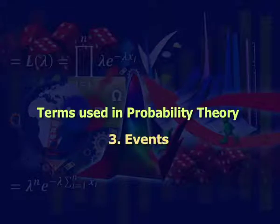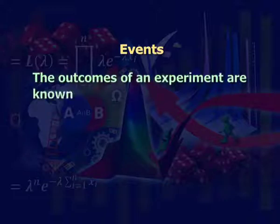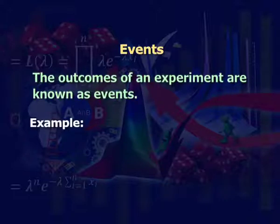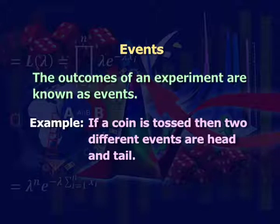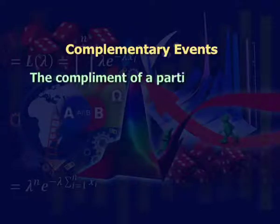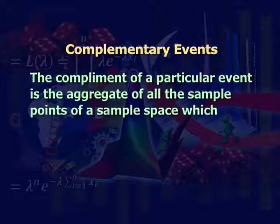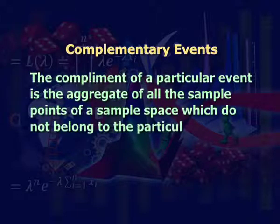Third: events. The outcomes of an experiment are known as events. For example, if a coin is tossed, then two different events are head and tail. Fourth: complementary events. The complement of a particular event is the aggregate of all the sample points of a sample space which do not belong to that particular event.